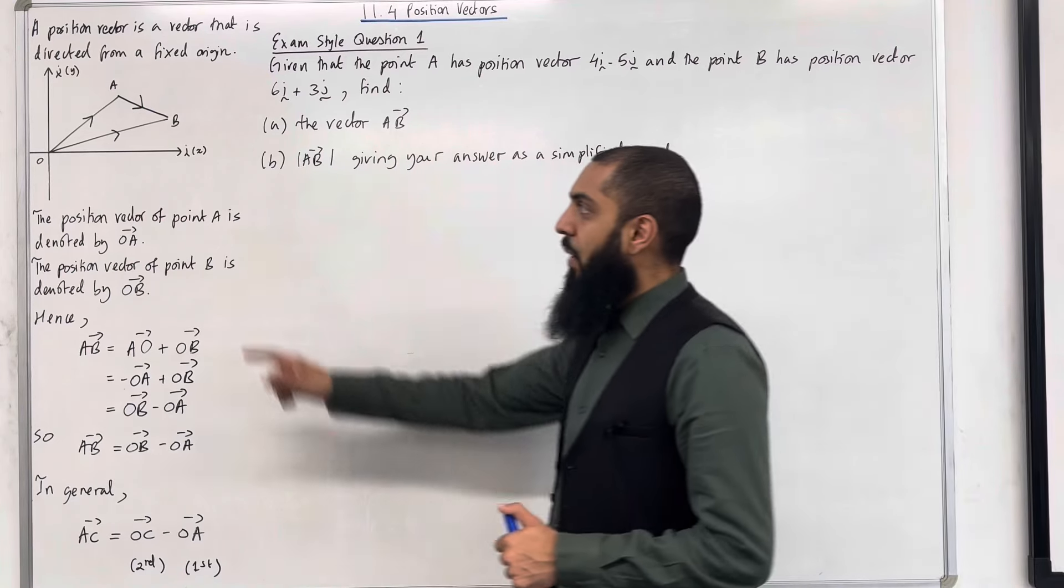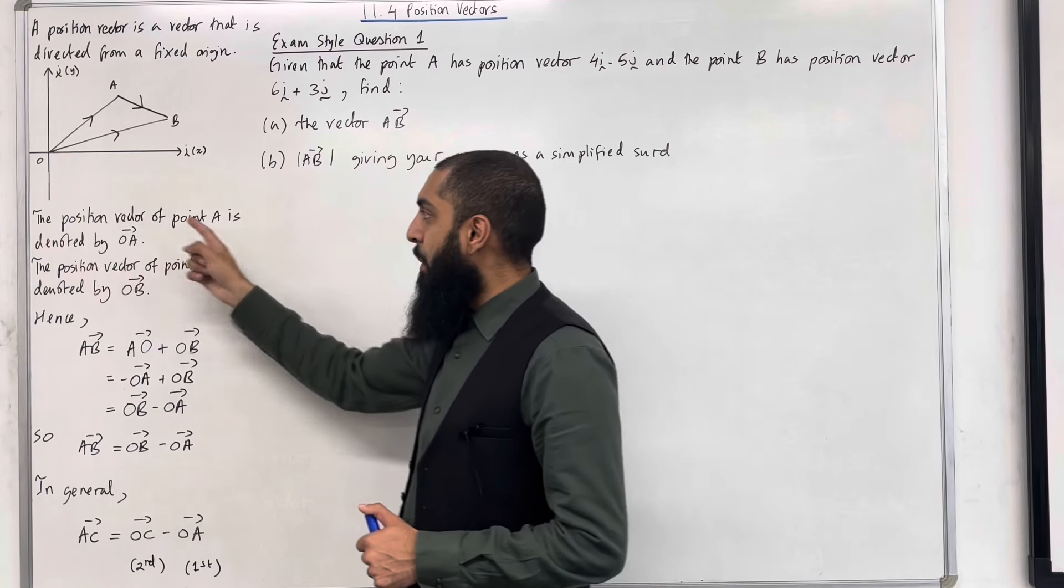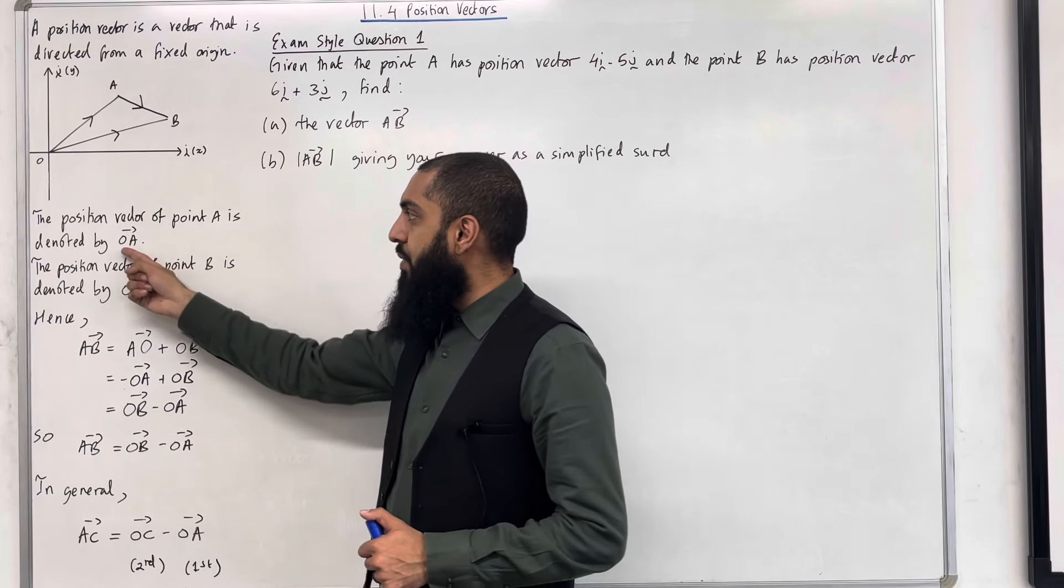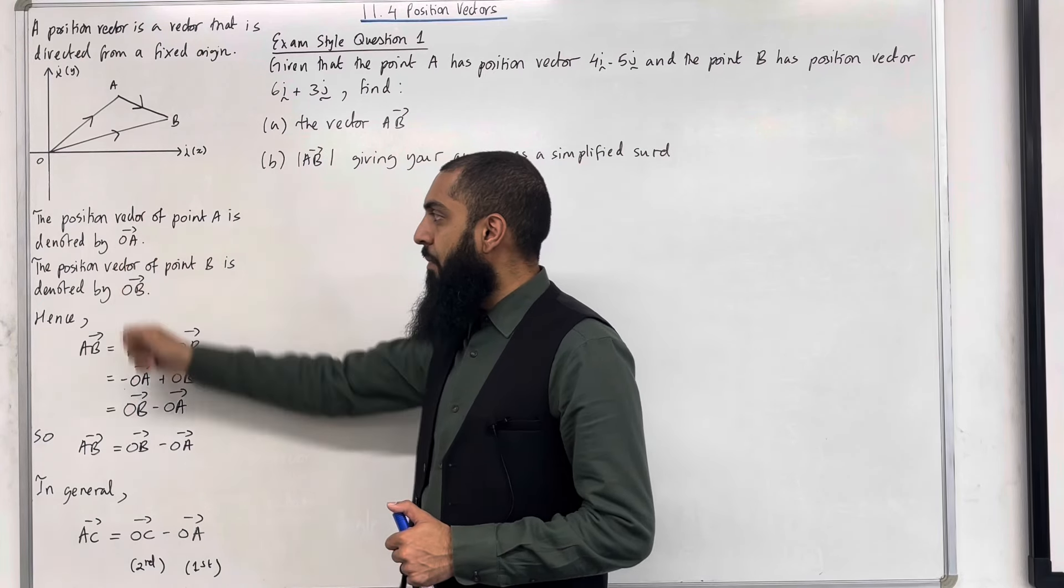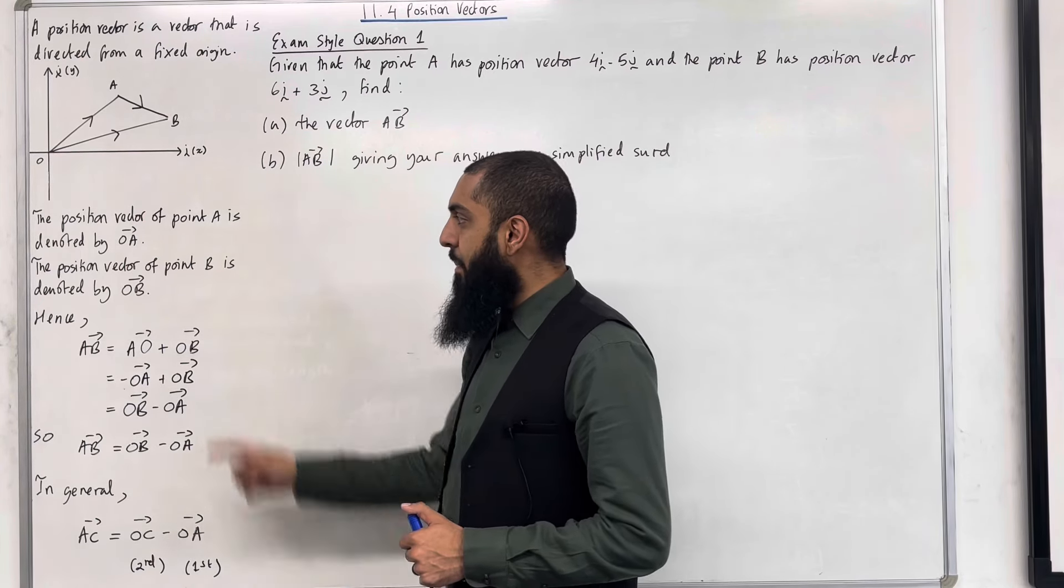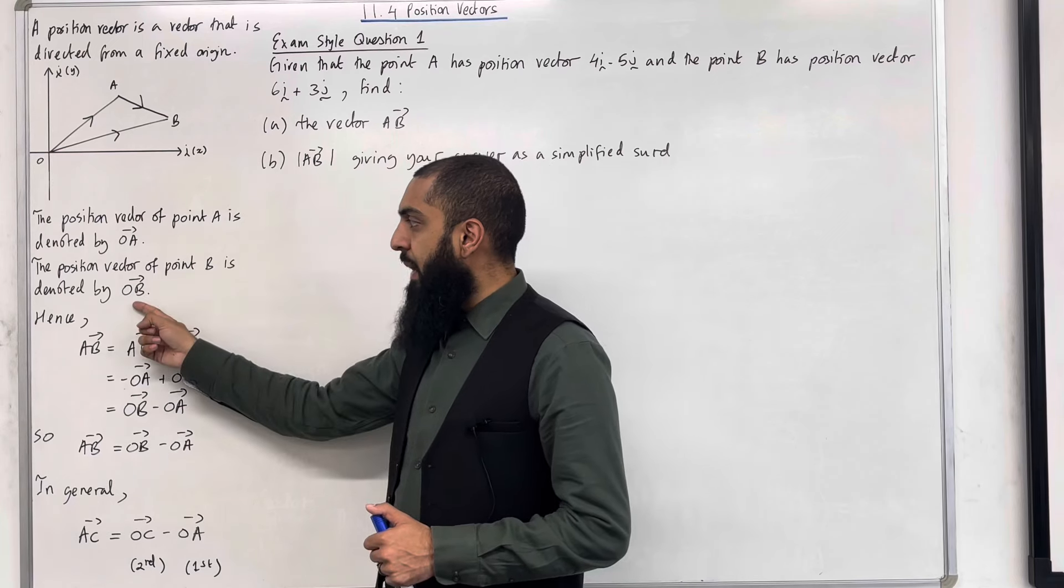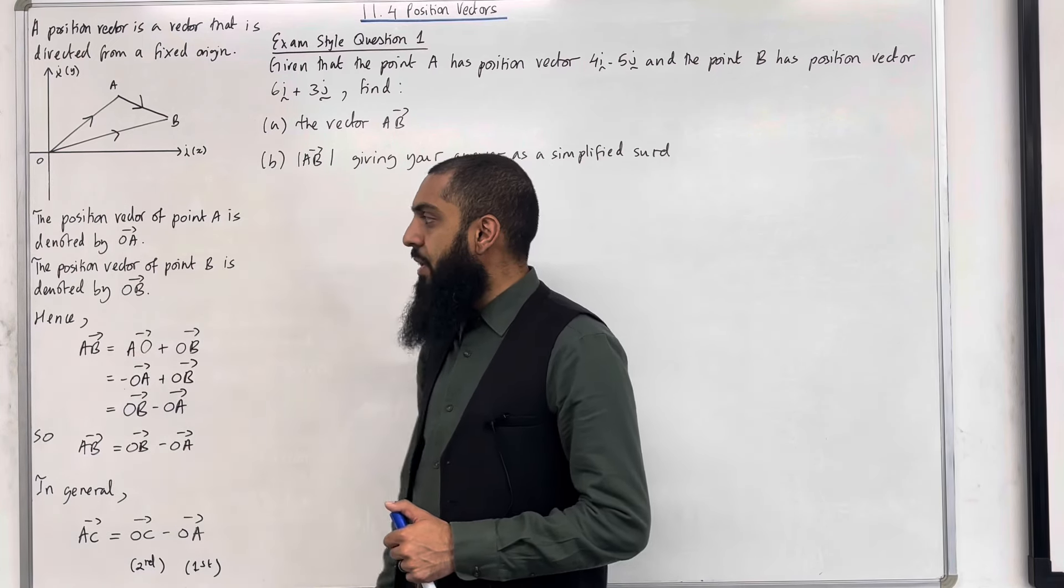Consider the following vector triangle. The position vector of point A is denoted by O to A. As you can see, A is directed from the fixed origin O. The position vector of point B is denoted by O to B. As you can see, B is directed from the fixed origin O.